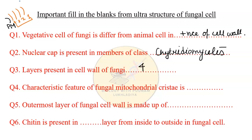The next fill-in-the-blank is: what is the characteristic feature of fungal mitochondrial cristae? We have studied that normal mitochondria in animals have cristae that are tubular shaped, whereas in fungal cells the cristae have a different form.